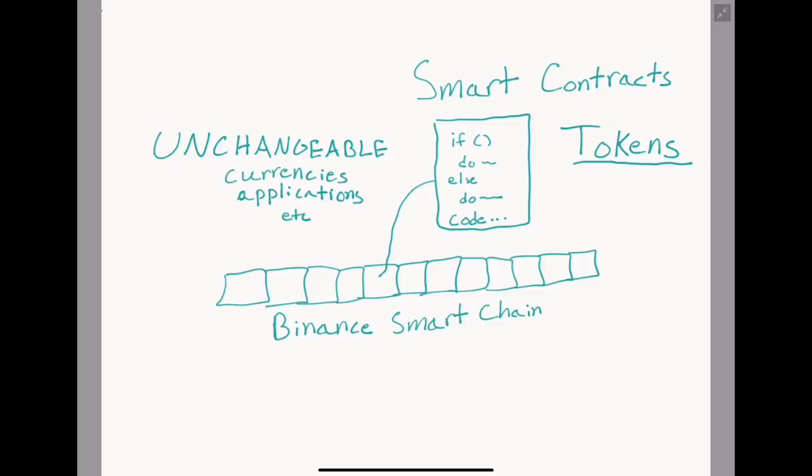What separates tokens like SafeMoon from other smart contracts is the existence of a few specific functions that the blockchain needs to call in order to interact with the token properly. Some of these should seem intuitive, but here are the essential functions every token needs to have in order to be tradable the way we are used to with SafeMoon. Tokens can have more code and more functions than this, but not any less.